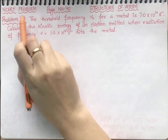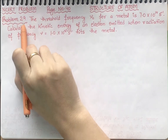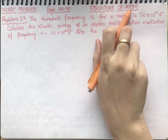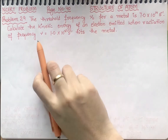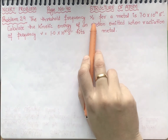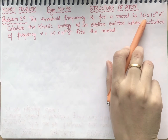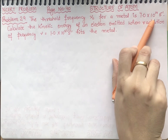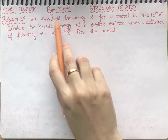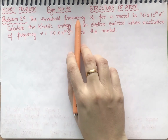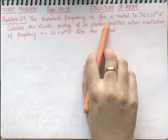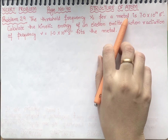Students, this is NCRT problem 2.9 from page number 40 of Structure of Atom. In the statement, they are saying the threshold frequency ν₀ for a metal is 7.0 × 10¹⁴ s⁻¹. Threshold frequency means the minimum amount of frequency required to eject an electron from the metal surface.